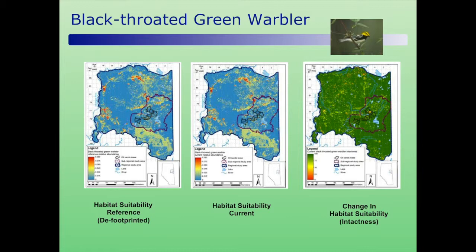From an ABMI perspective, we call this 'intactness,' but really it's just the change in habitat suitability for each species. I've shown you the results for Black-throated Green Warbler, but you can do this modeling for every species, as long as you can find the data.